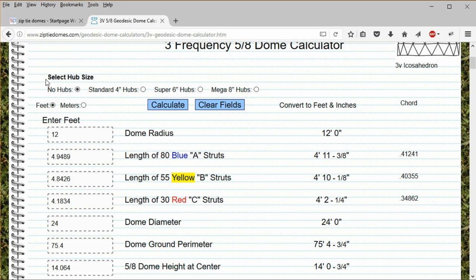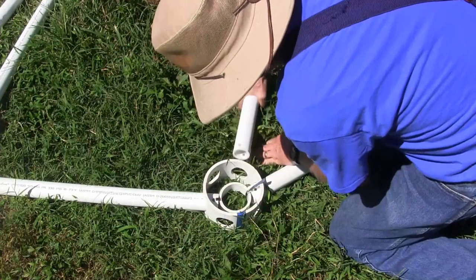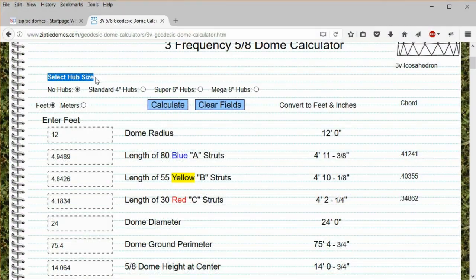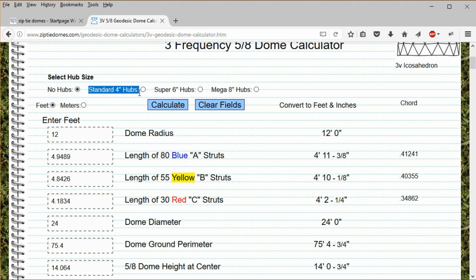Our hubs have a center ring that is surrounded by the struts. To make an accurate measurement, we add the width of this center ring to the strut length. The center ring in our standard 4-inch hubs adds 2 3/8 inches to the strut length, while the super hubs and mega hubs add 3 1/2 and 4 1/2 inches to the strut length.